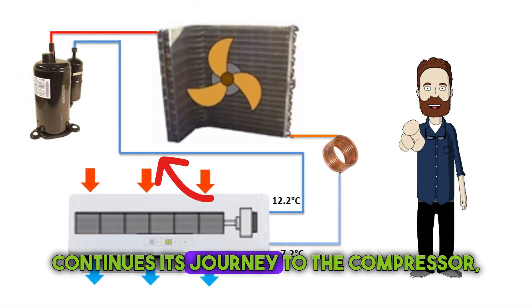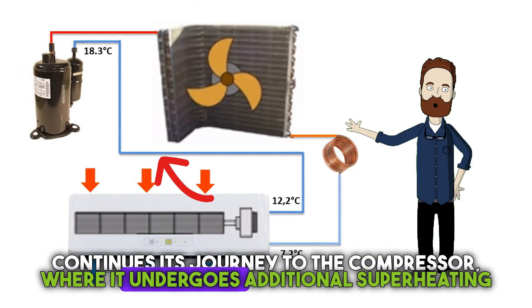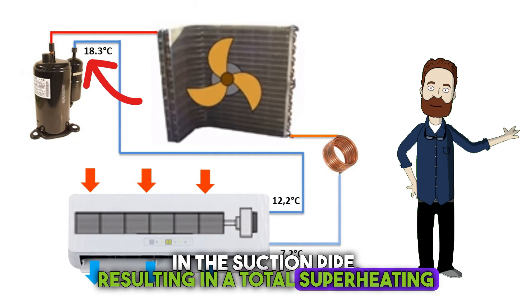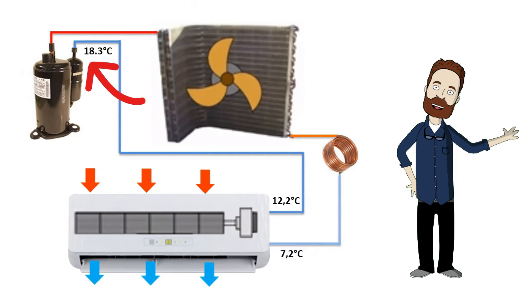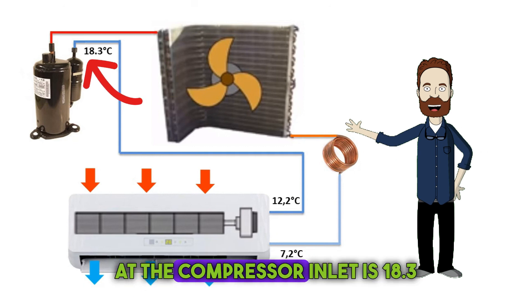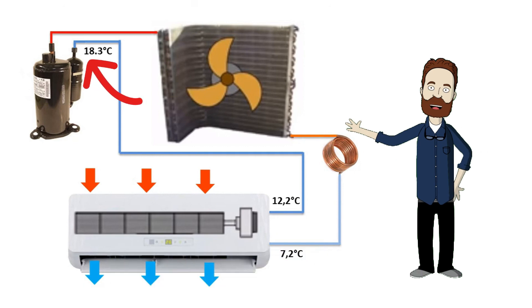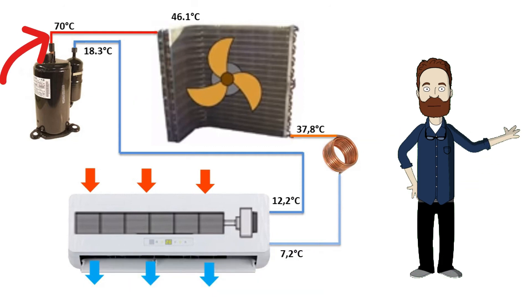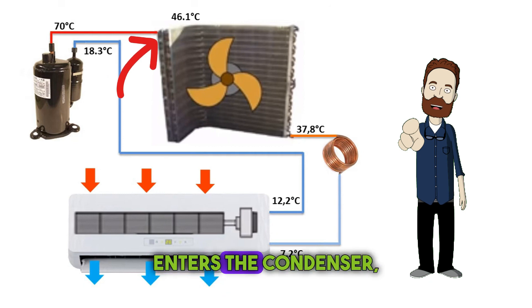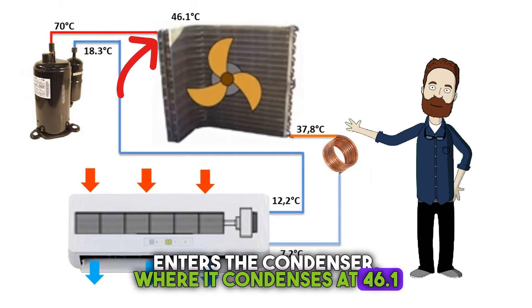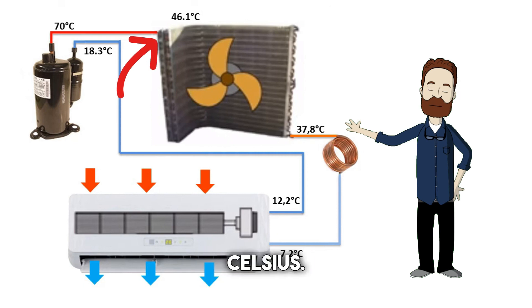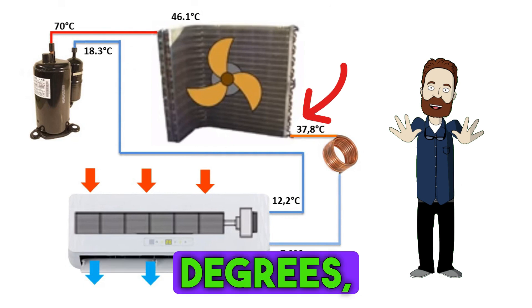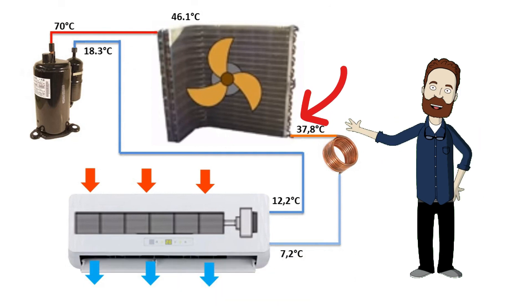The gas continues its journey to the compressor, where it undergoes additional superheating in the suction pipe, resulting in a total superheating of 11.1 degrees Celsius. The temperature at the compressor inlet is 18.3 degrees Celsius. The compressor raises the pressure and temperature of the gas, and then the gas enters the condenser, where it condenses at 46.1 degrees Celsius. At the end of the condenser, the liquid undergoes subcooling of 8.3 degrees, exiting at 37.8 degrees Celsius.